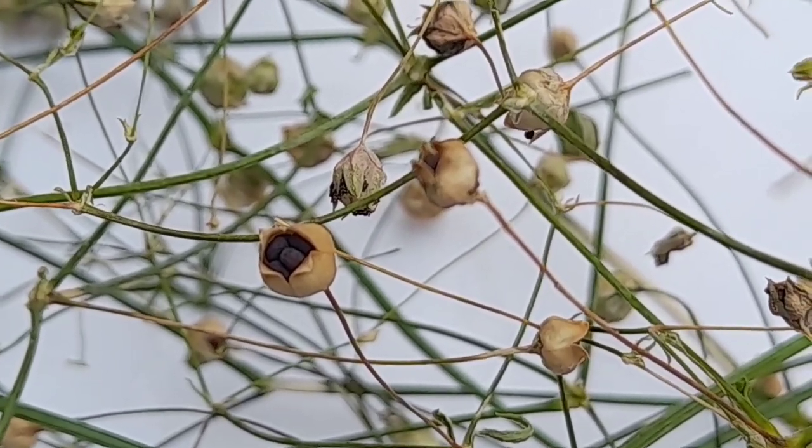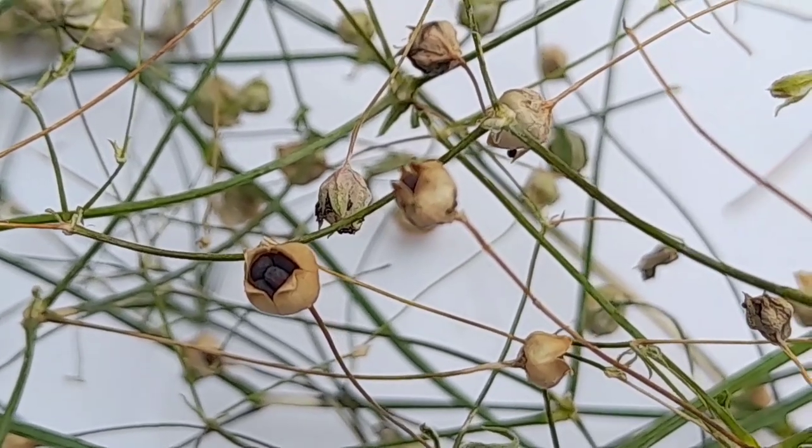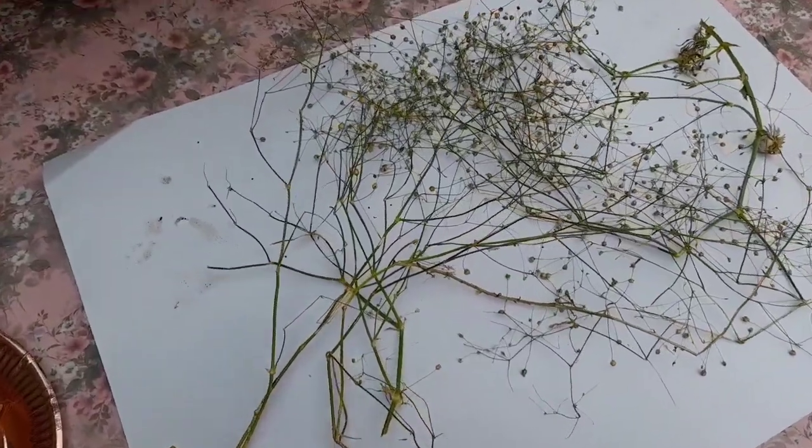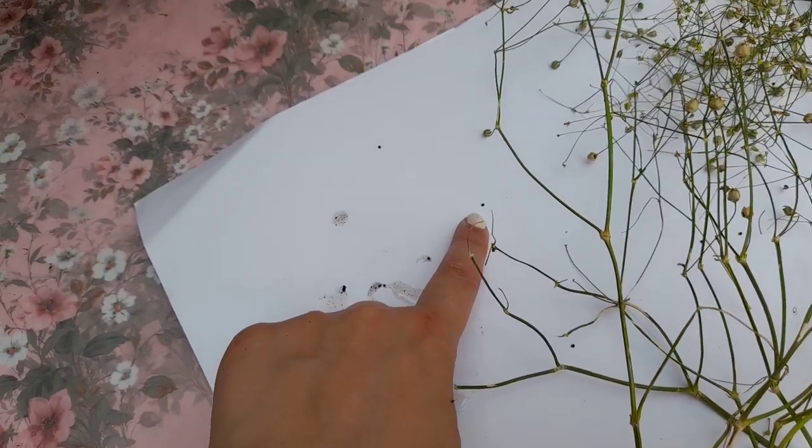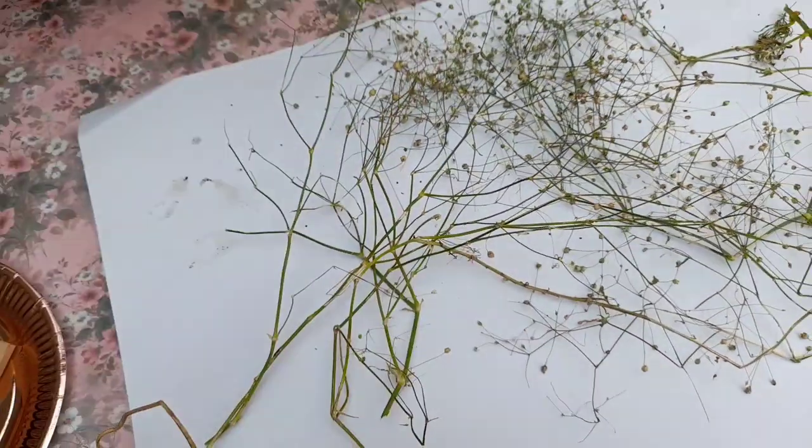As you can see, they've dried up and the pods have started opening up to reveal the seeds inside. Some of them weren't open but they were really crispy on the outside which signals that they are ready. There you can see some of the seeds have already started falling out on the white paper that I've put underneath.